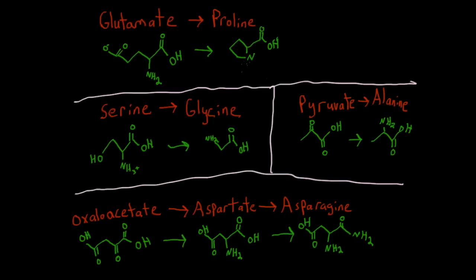Looking at other interconversions: for glutamate to proline, we remove the carboxyl group and form a ring structure, bending the chain around to connect to the nitrogen. For serine to glycine, we remove the hydroxyl group, leaving a nitrogen on the second carbon. For pyruvate to alanine, we remove the keto group and add a nitrogen — this is a repeated theme throughout.